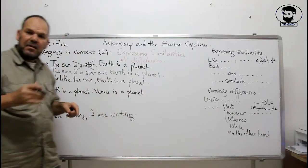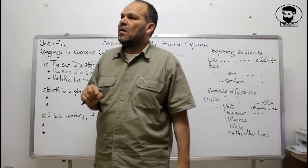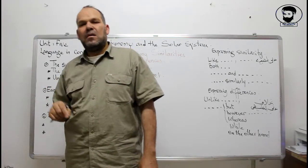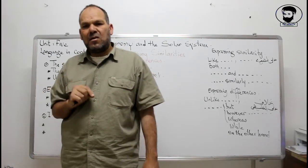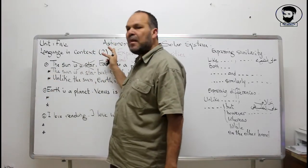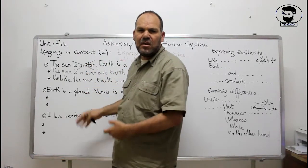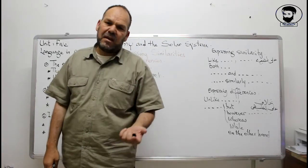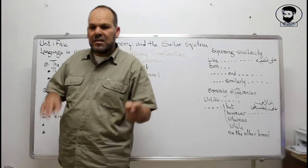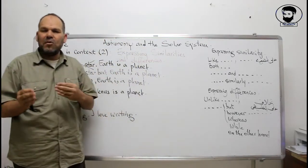Now let's see how we express similarities. Earth is a planet. Venus is a planet. Algeria is a country and Tunisia is a country. America is a continent and Asia is a continent. You can use this for other themes — not just astronomy — for ethics, education, civilization. For example, the Sumerians have a civilization and the Egyptians have a civilization. I'm showing you how to express contrast or similarity — that is, the differences or shared qualities between two things.